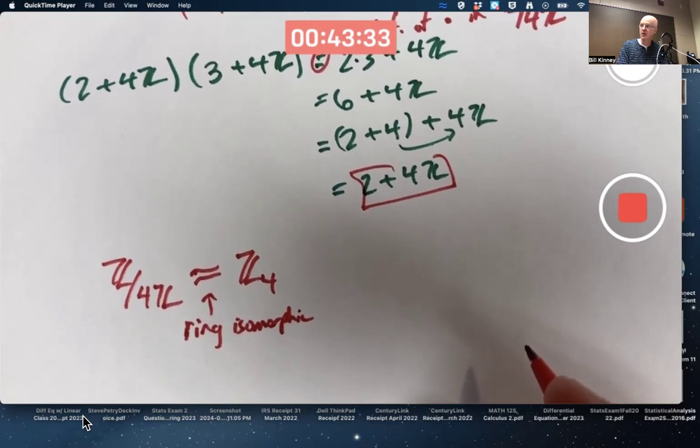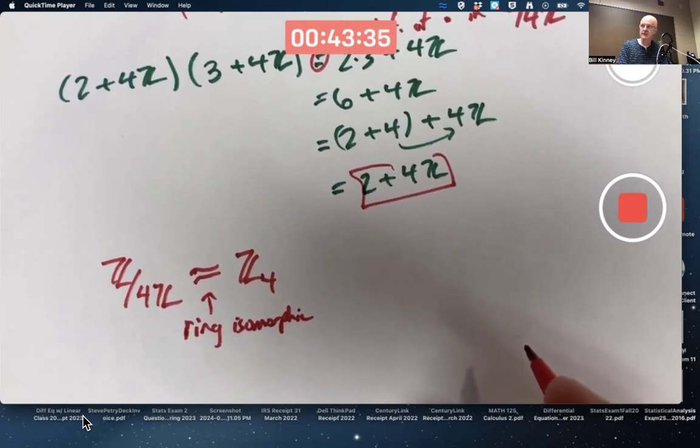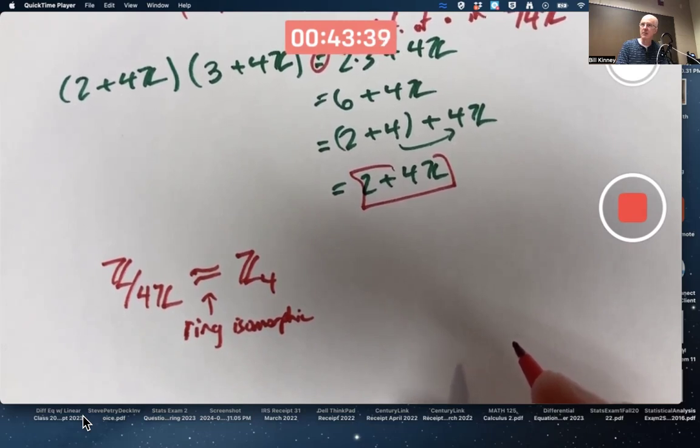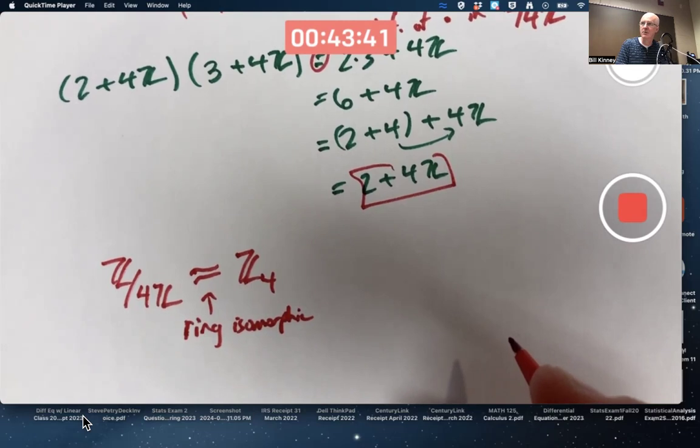Very similar to group isomorphisms and group homomorphisms. The main difference is the operation-preserving property has to work for both addition and multiplication.